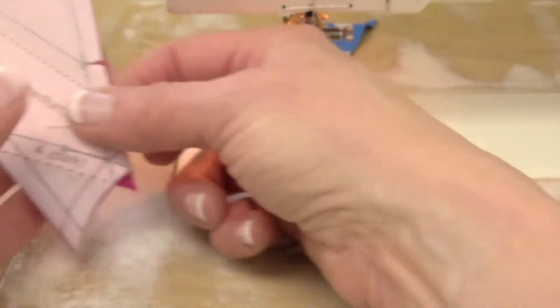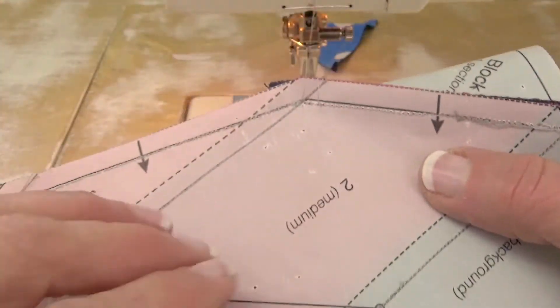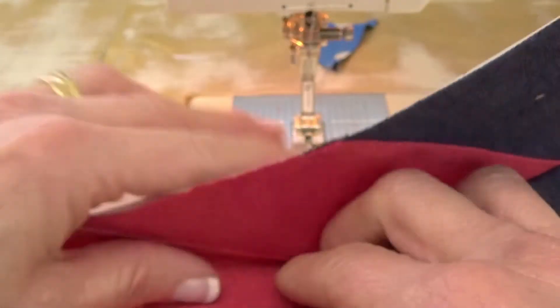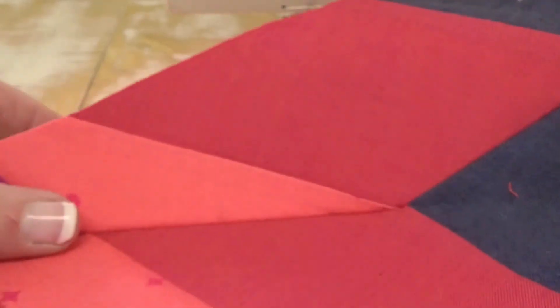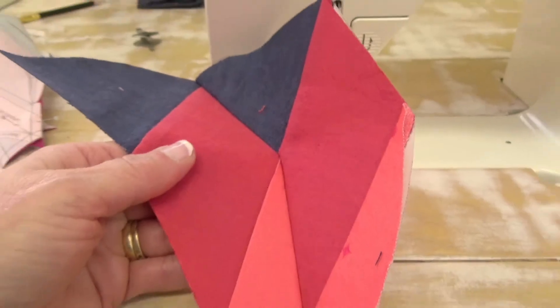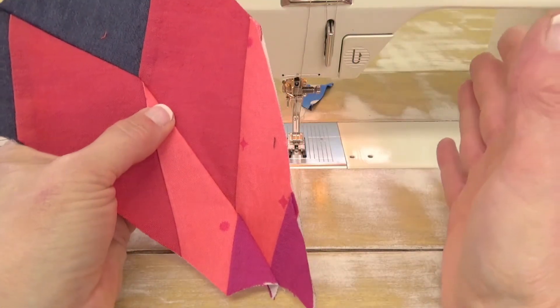Once you get that sewn, you'll take the paper out of the seam allowances on both sides and press the seams in the direction of the arrows. You put two sections together. Then you put two of these sections together to make four.